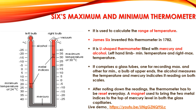James Six invented this thermometer in 1782. It is a U-shaped thermometer filled with mercury and alcohol. As you can see on the screen, the alcohol shown on the top measures the temperature, whereas mercury shown on the bottom indicates the reading on both scales. You can also see the glass tube has a bulb on the upper end. After noting down the reading, the thermometer has to be reset every day. There are two metal indices shown on the screen in between the glass tubes, and these metal indices are reset every day with the help of a magnet. If you want to see a live video of resetting the steel indices using a magnet, you can go through the link given below.